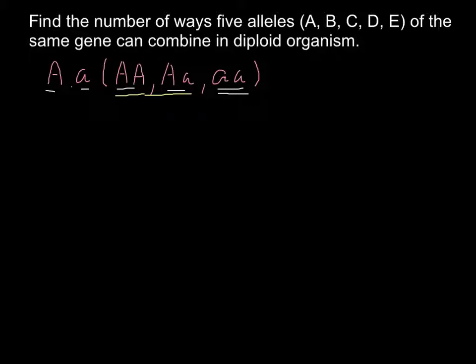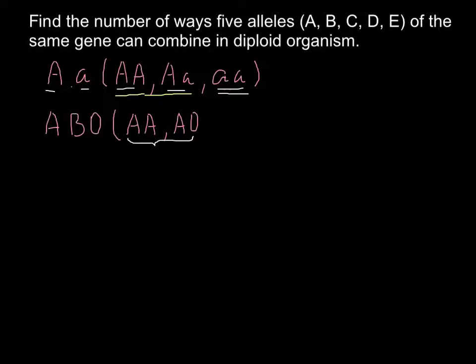I also want to remind you about a different problem that you might know — the ABO blood group system, where we have three different alleles: A, B, and O. Such three alleles may produce six genotypes and four phenotypes. The first genotypes would be capital A capital A and capital A O, and these two genotypes would produce one phenotype, which is blood group A.